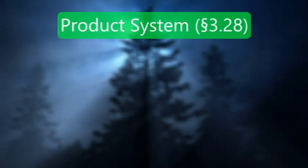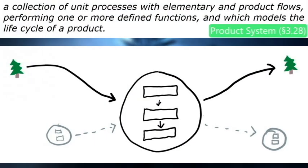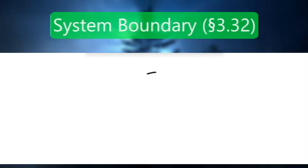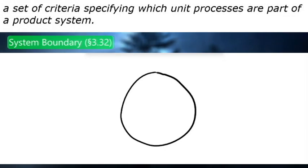A Product System is a collection of unit processes with elementary and product flows, performing one or more defined functions, and which models the life cycle of a product. A Product System is delineated by the System Boundary, which is a set of criteria specifying which unit processes are part of a product system.